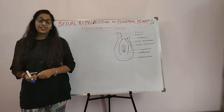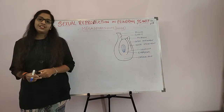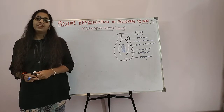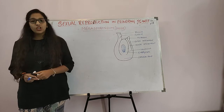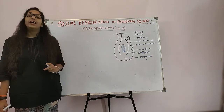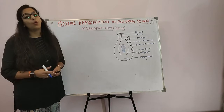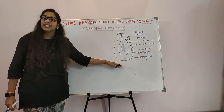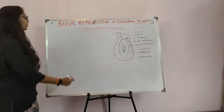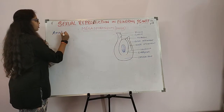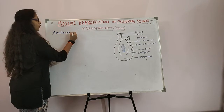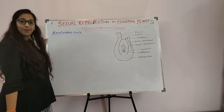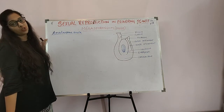Welcome back dear students. In this class, let us learn another 5-marks important question in this chapter — the structure of Megasporangium, also known as Ovule. The type of ovule I am showing here is the Anatropous Ovule. So explain the structure of Anatropous Ovule.